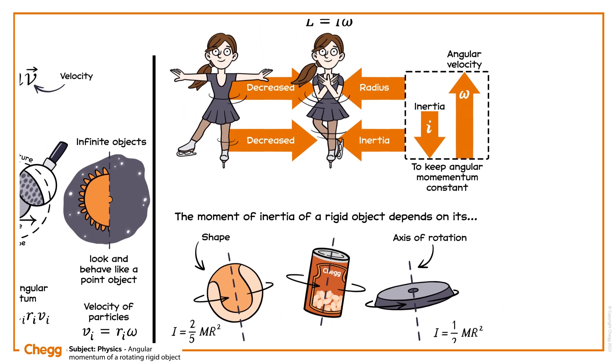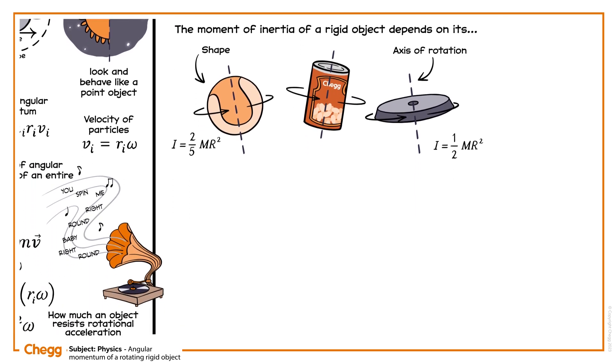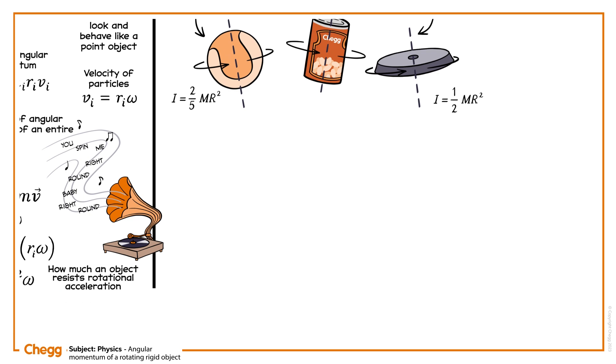But don't forget, angular momentum is a vector, so it needs a direction and a magnitude. The final thing we'll learn in this lesson is the right hand rule, a trick used to determine the direction of angular momentum.